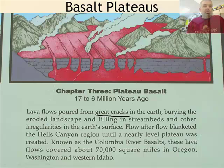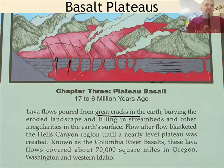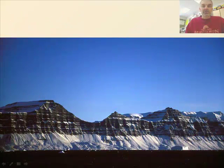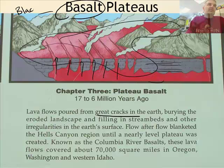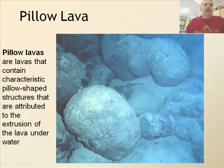Next is a basalt plateau. Lots of lava pours from great cracks — instead of coming up in one place, it comes up in lots of places, burying the eroded landscape. Flow after flow blankets the area. This is Hell's Canyon, also known as the Columbia River Basalts — these lava flows covered about 70,000 square miles in Oregon and Washington. Basalt is a typically very black rock.